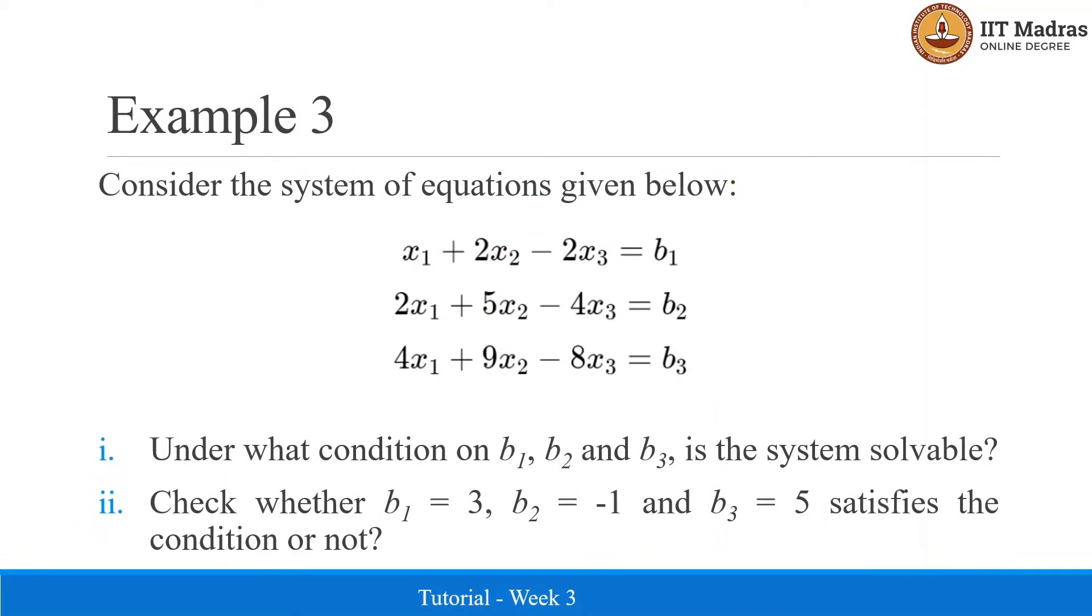In this example, we are given a system of equations. We have to find on what conditions on B1, B2, B3 is the system solvable. We know that system of linear equations with Ax equal to B is solvable when B belongs to the column space of A.